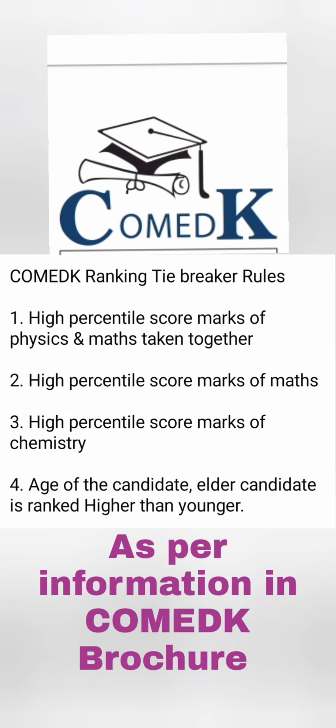There are a set of COMEDK tiebreaker rules. The first rule is that they will check the combined percentage score of Physics and Maths together. The student with higher combined marks in Physics and Maths will get a better rank — that is the first criteria.